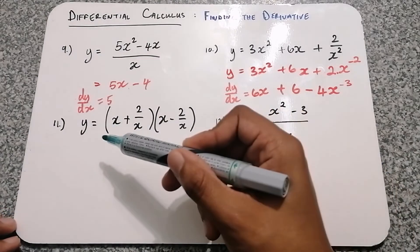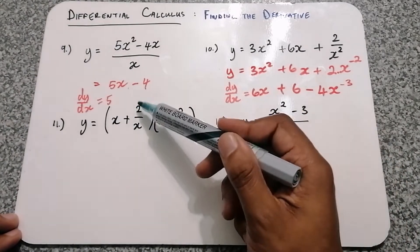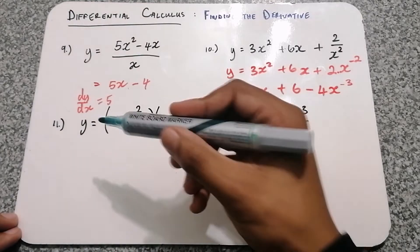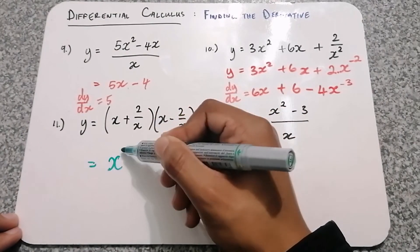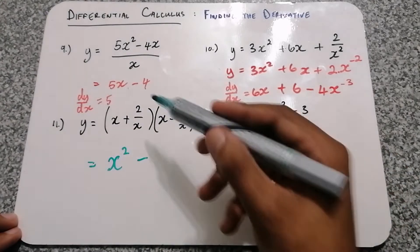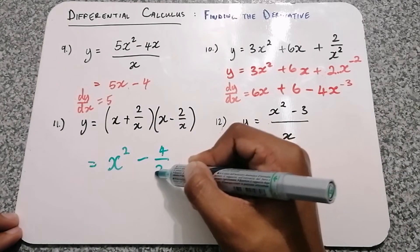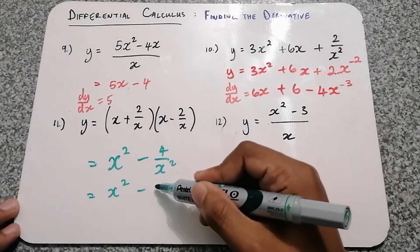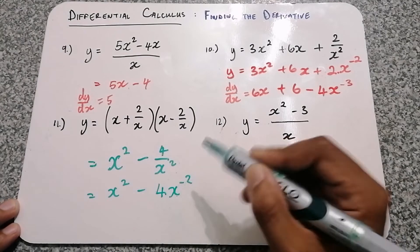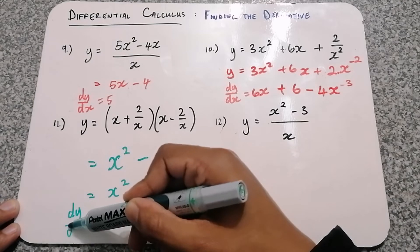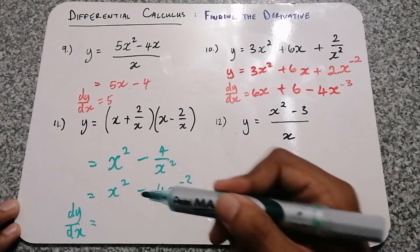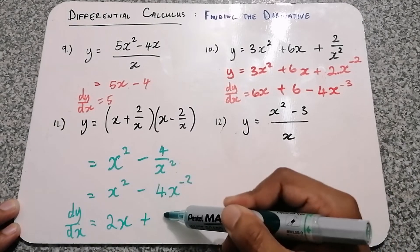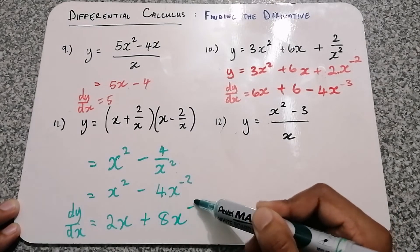Question 11: we again have difference of squares — x plus 2 over x, times x minus 2 over x. We square each term and put a minus in the middle. x squared is x squared, minus, and 2 over x squared becomes 4 over x squared. Let's bring that term to the top to prepare for the derivative. The derivative of x squared is 2x. Negative 2 times negative 4 gives us positive 8, and negative 2 minus 1 is negative 3.